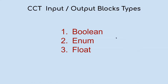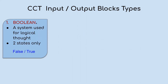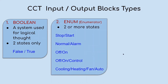Here are the three types of input/output blocks that we have in CCT: Boolean, Enum, and Float. Boolean — the first type — are inputs or outputs that can only have two values or two states: false and true, nothing else. Other programs may use different units like 0/1 or off/on, but in CCT it is strictly false and true. A little definition: a system used for logical thought.